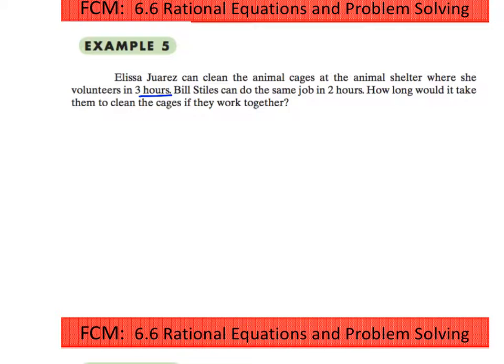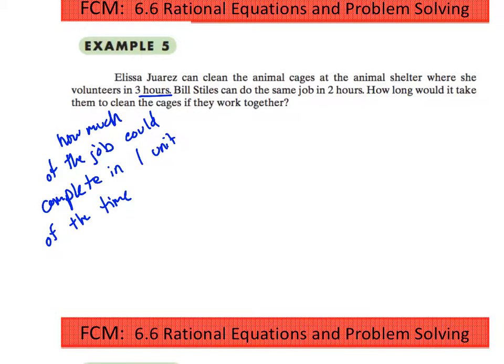So we're going to think of this in terms of how much of the job could they complete in one unit of the given time? So if Elisa can complete the whole job in three hours, then in one hour she can complete a third of the job. And then Bill, in one hour, if he can complete the same job in two hours, in one hour he can complete half the job.